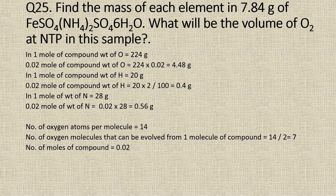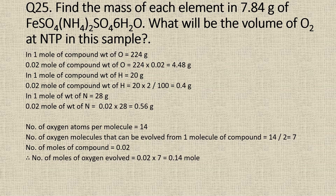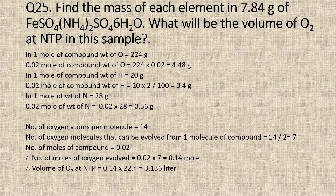Therefore, from 0.02 moles of the compound, the number of moles of oxygen evolved will be 0.02 into 7, which is equal to 0.14 moles. Now, we know that 1 mole of any gas occupies 22.4 liters. Therefore, the volume of oxygen at NTP will be 0.14 into 22.4, which is equal to 3.136 liters.